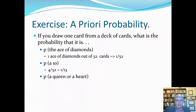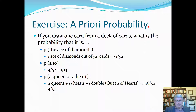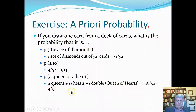What's the probability of getting a queen or a heart? There are 4 queens and 13 hearts, but one card — the queen of hearts — is both, so it's double-counted. We subtract it: 4 plus 13 minus 1 equals 16, divided by 52, which simplifies to 4 out of 13, or roughly 38%. That's the probability of getting a queen or a heart.